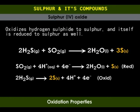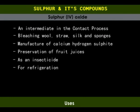Sulfur dioxide is used as an intermediate in the manufacture of sulfuric acid by the contact process. It is used for bleaching wool, straw and silk — materials that cannot be bleached using chlorine as they react with it. It is used in the manufacture of calcium hydrogen sulfate for bleaching wood pulp in paper manufacture. It is used in small concentrations as a preservative for fruit juices, acting by reacting with any oxygen present and preventing the growth of bacteria and fungi that may promote fermentation. Dry sulfur dioxide is used as an insecticide for mosquitoes, flies and fleas, and as an anti-vermin agent for rats. Liquid sulfur dioxide is used in refrigerators.